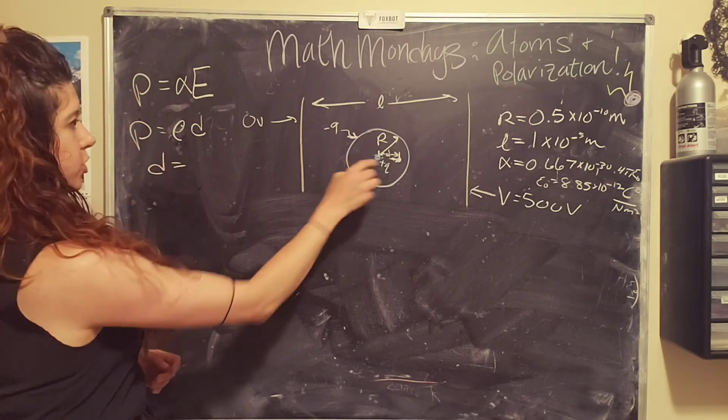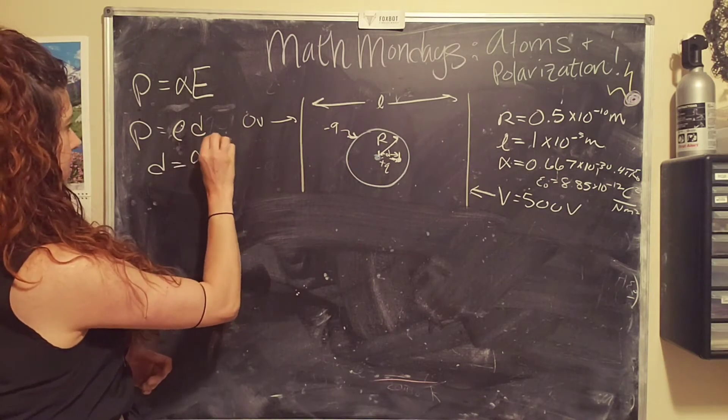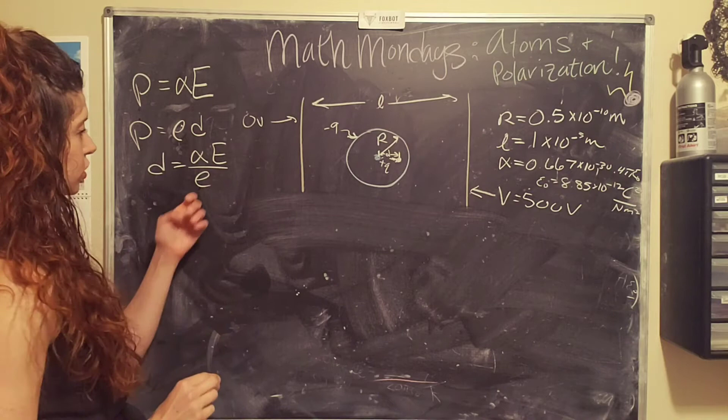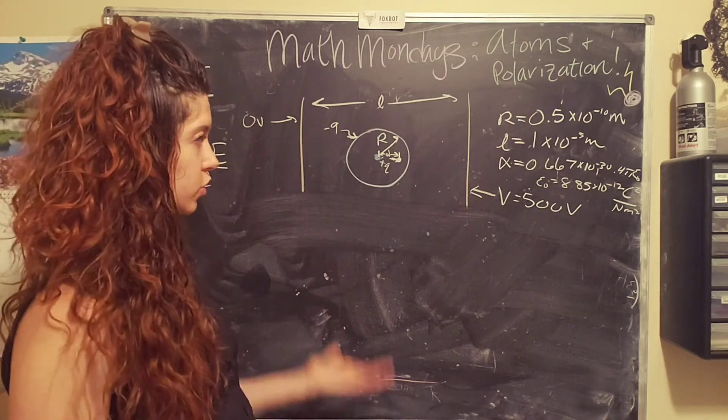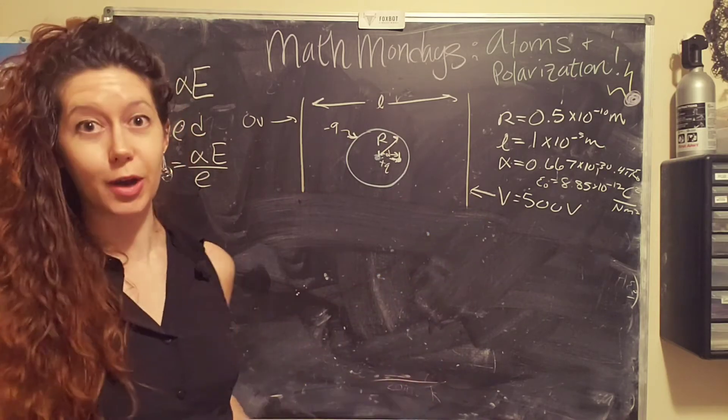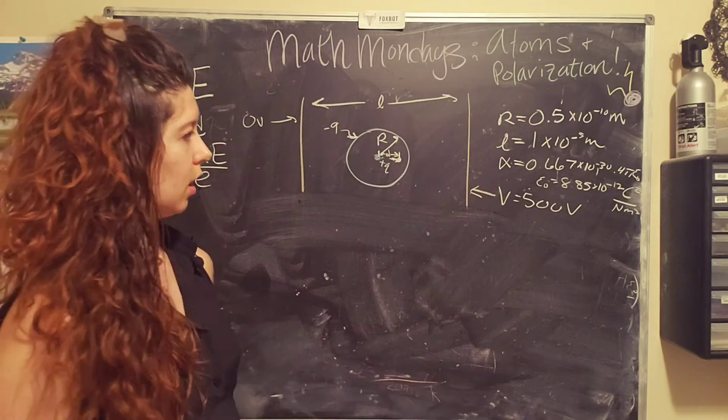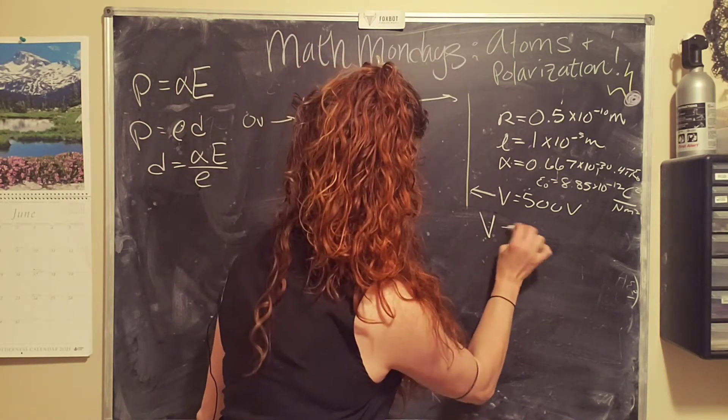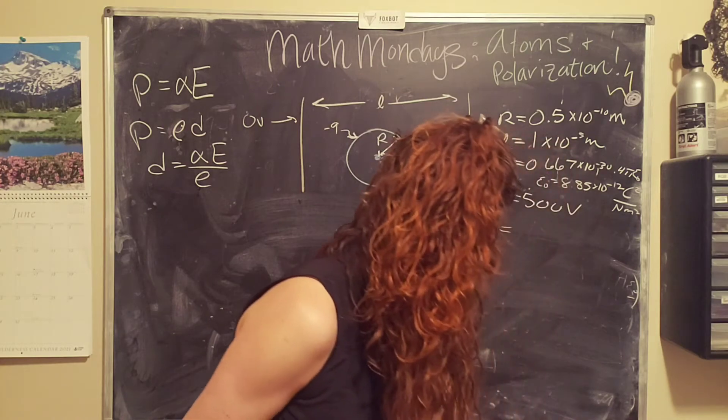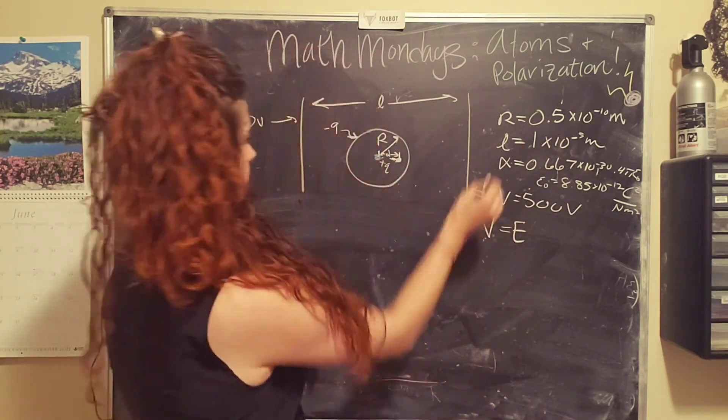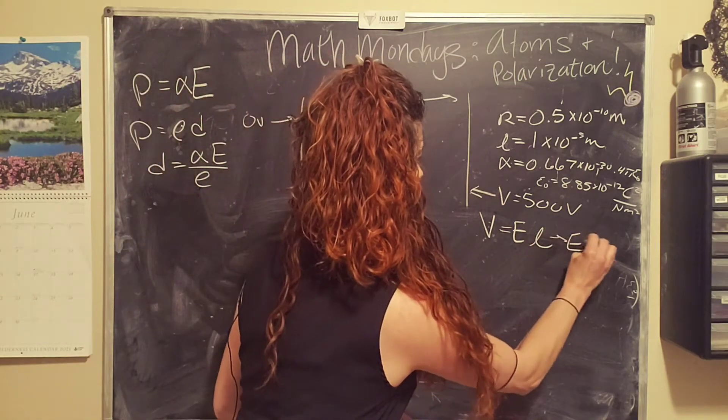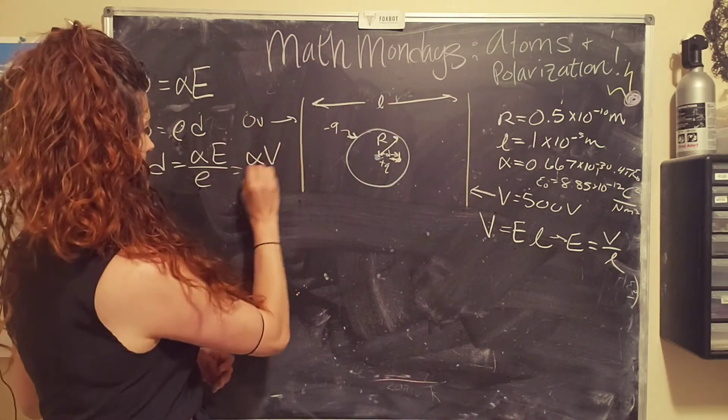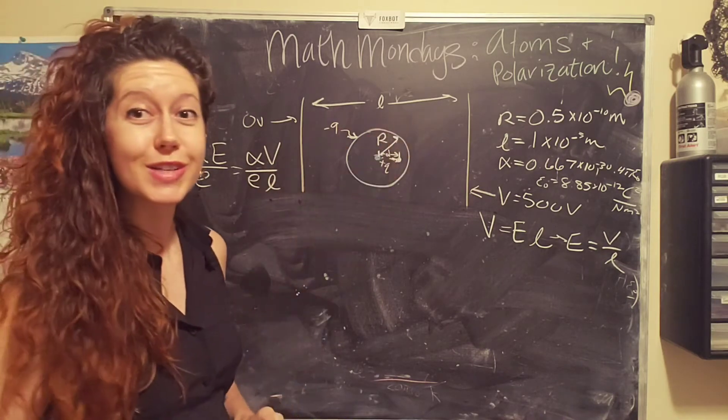And so then we just set these equal to each other and solve for d. So we're going to get the separation distance d equals alpha times the electric field divided by the charge of the electron. And in this case, we're not actually given the electric field, but we know that the parallel plate capacitor, two plates that are separated by a distance with charge on them is a parallel plate capacitor. And the voltage of a parallel plate capacitor is given by the electric field times the separation distance here. And so we solve for the electric field, v divided by l, and then we plug that back in here. So we're going to get alpha times v over the charge of the electron times the separation distance l.